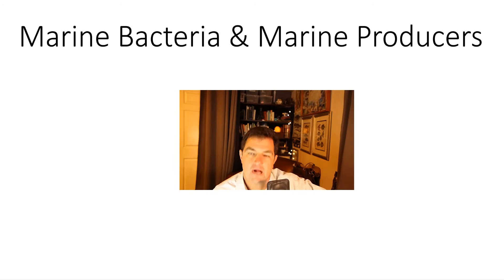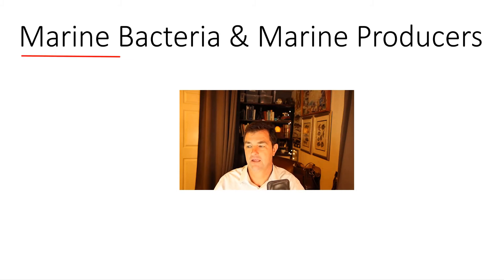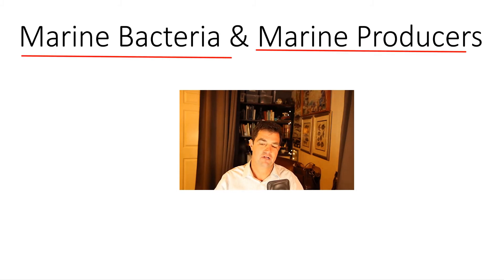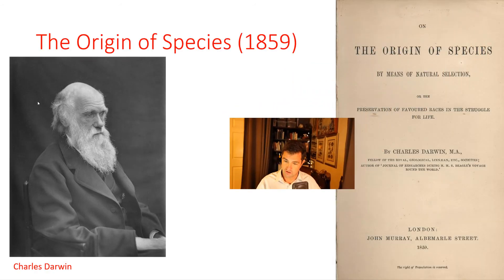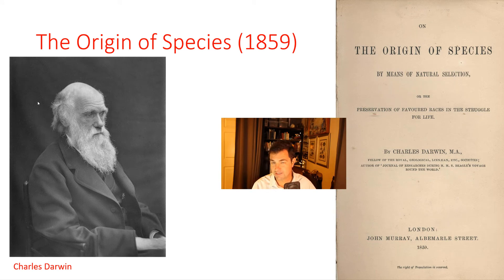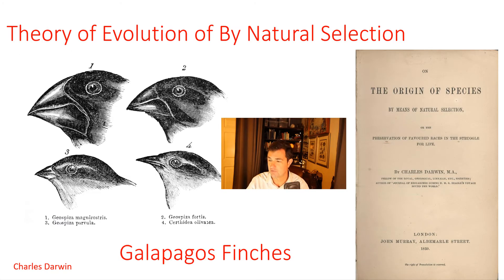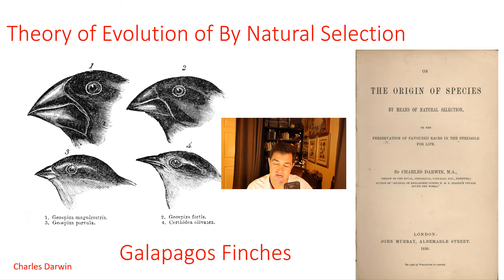All right, here we go, marine biology students. Today: marine bacteria and marine producers — we'll see how far we get. But first, Charles Darwin. Darwin wrote the Origin of Species, published in 1859, and you probably know that Charles Darwin has something to do with evolution. When most people think about Darwin, they think about the theory of evolution by natural selection, the word 'theory,' and something about the Galapagos Finches.